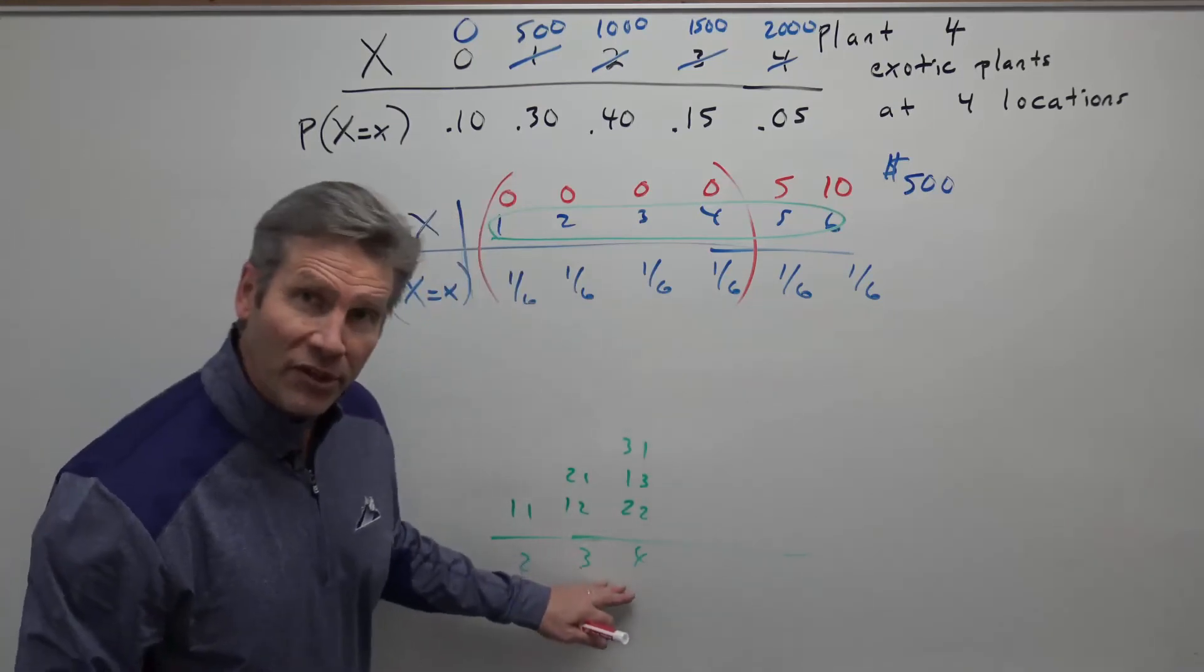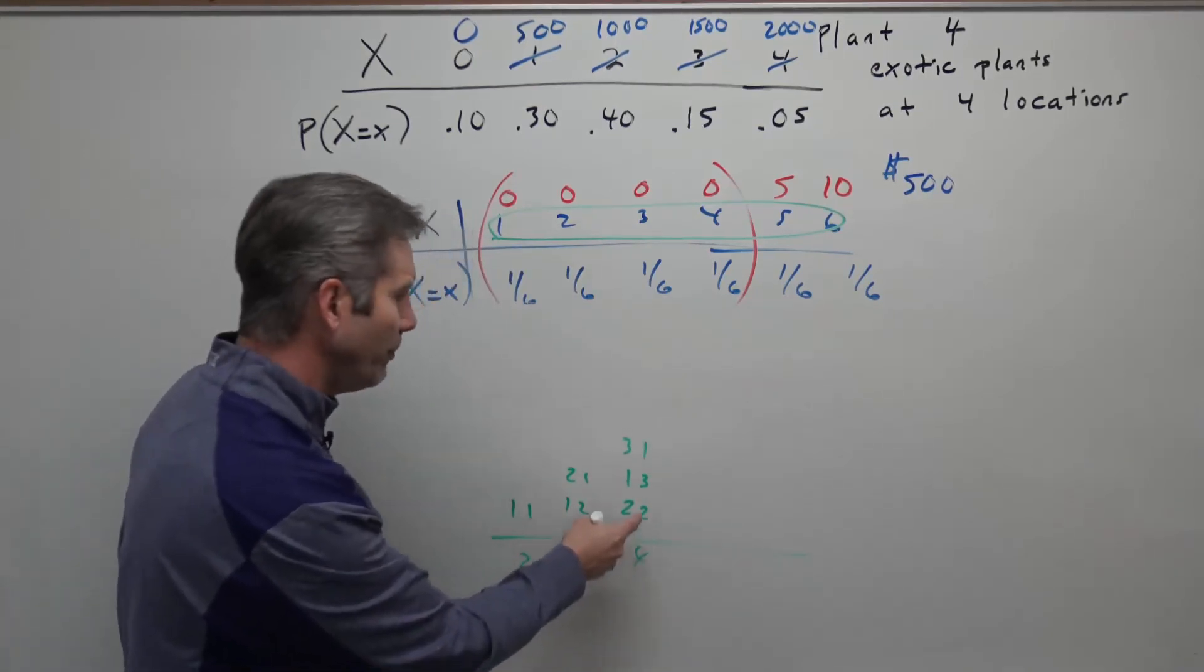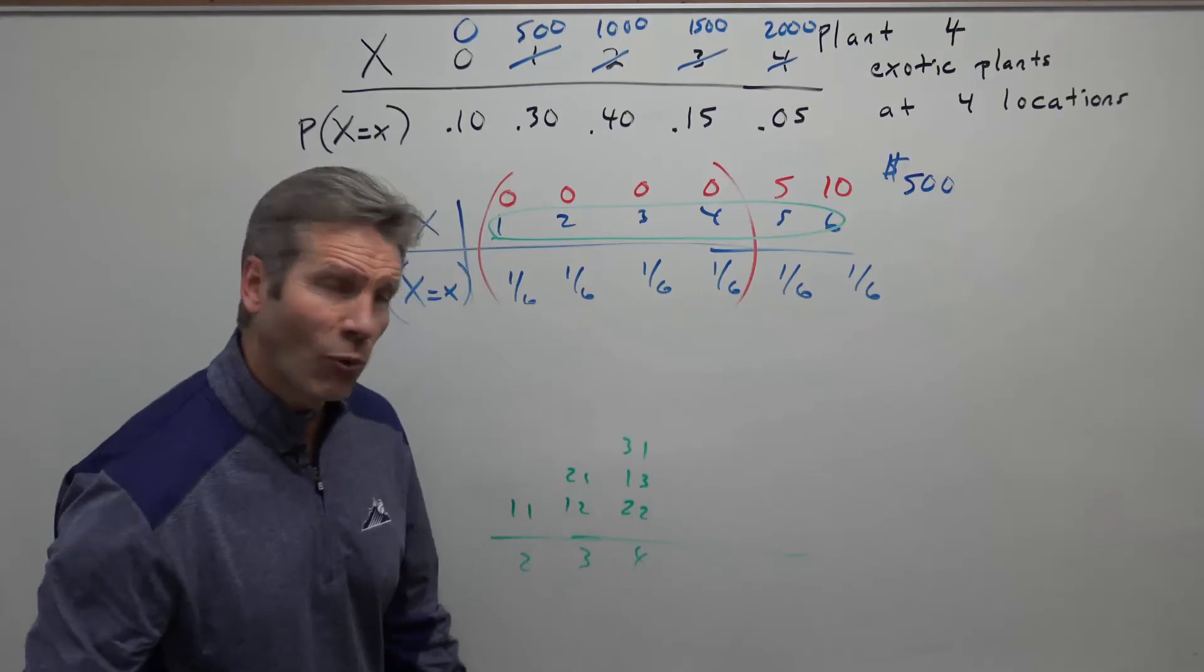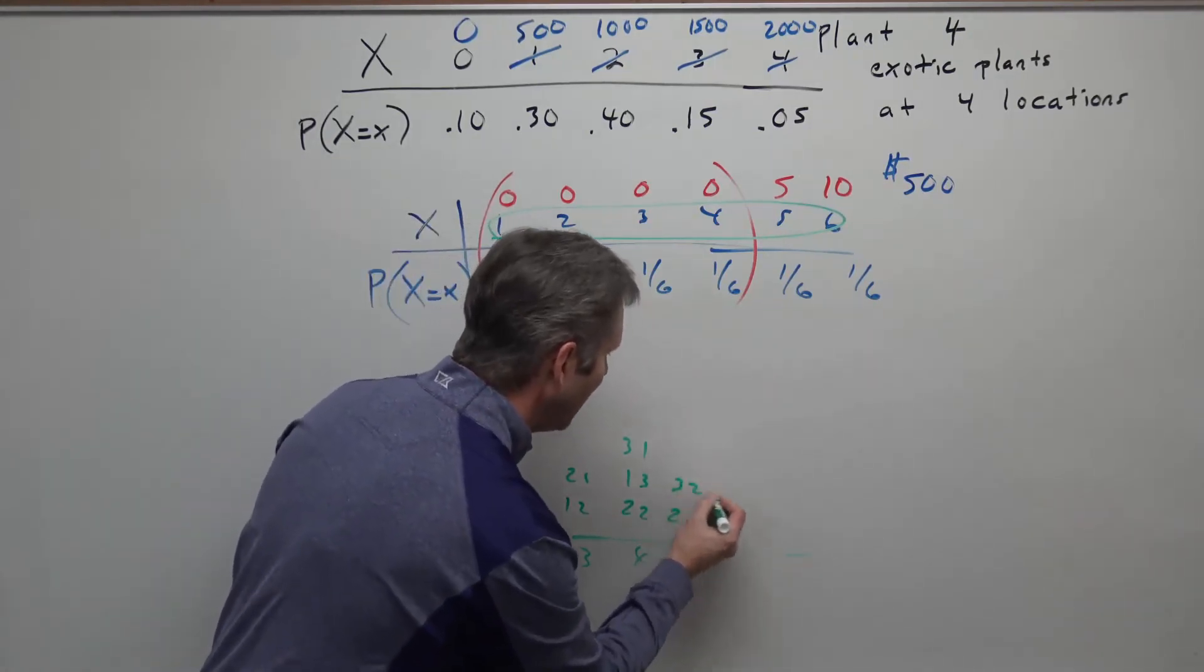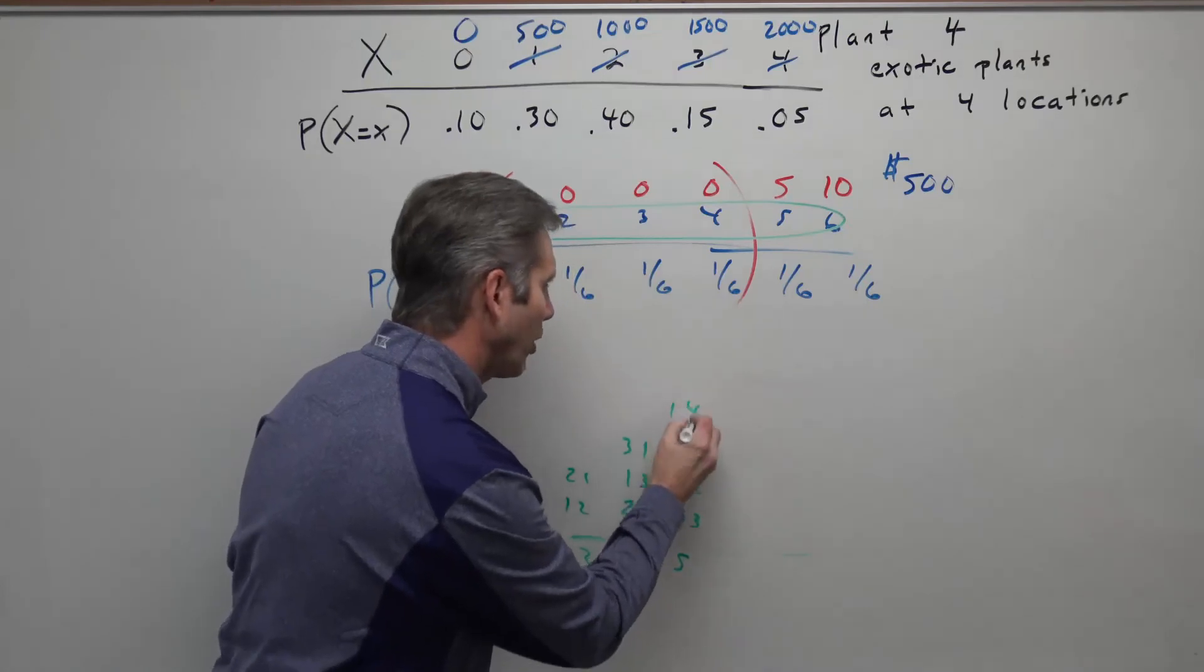How many ways can we get a sum of 4? We can get a 2 and a 2, a 1 and a 3, and a 3 and a 1 on the die. How many ways can you get a 5? You could get a 2 and a 3, a 3 and a 2, a 4 and a 1, or a 1 and a 4.